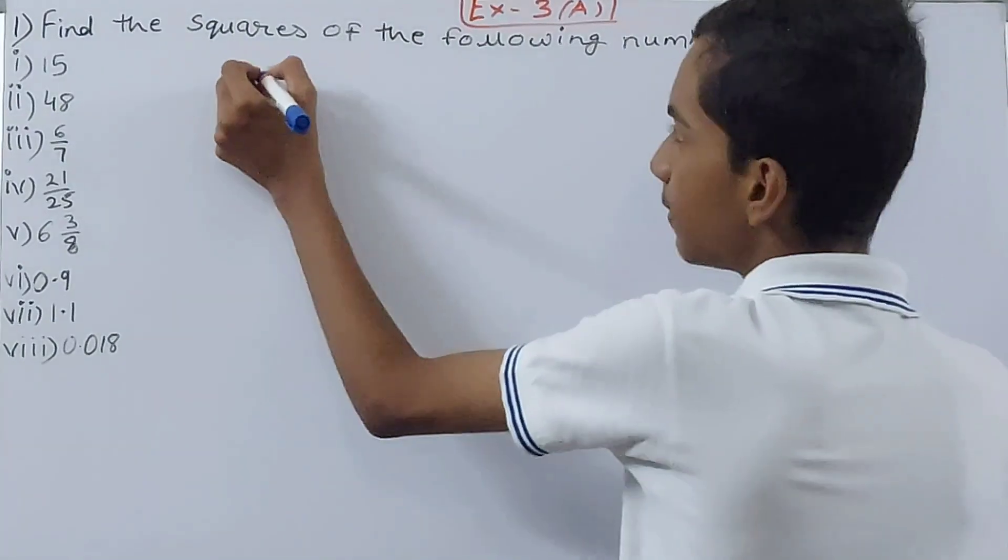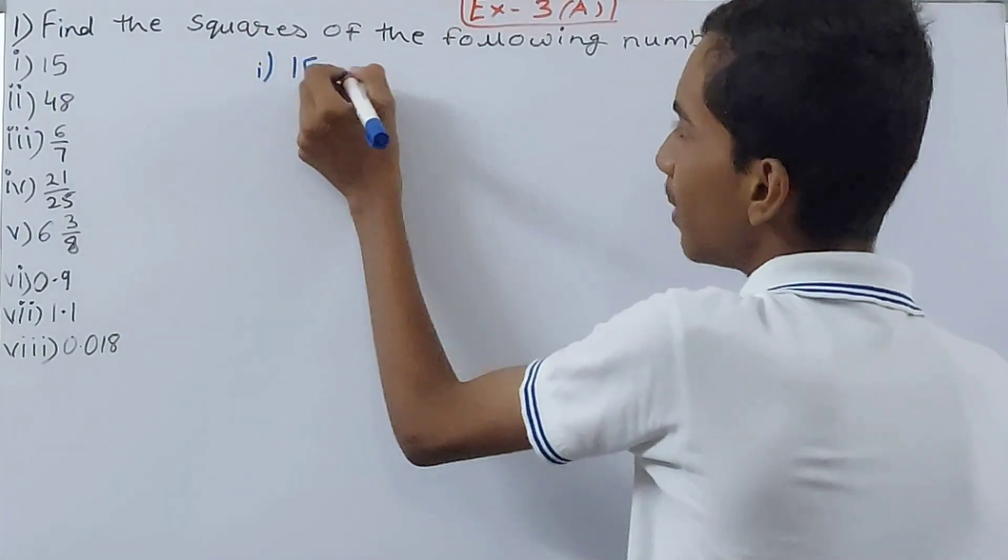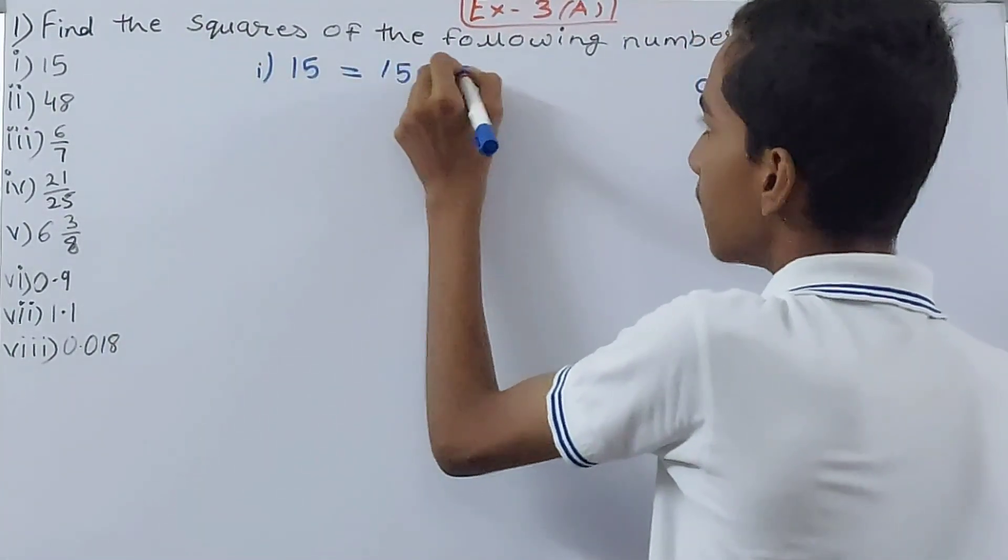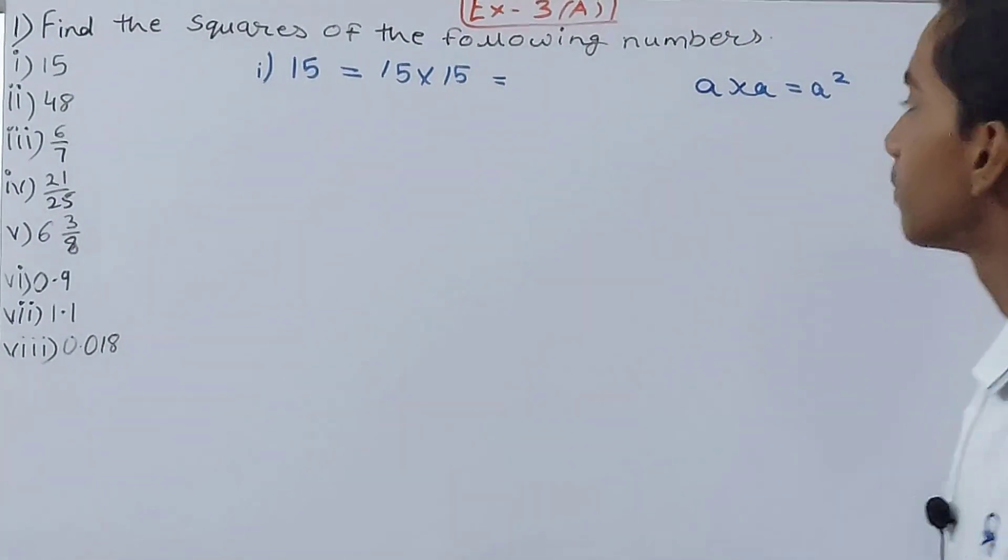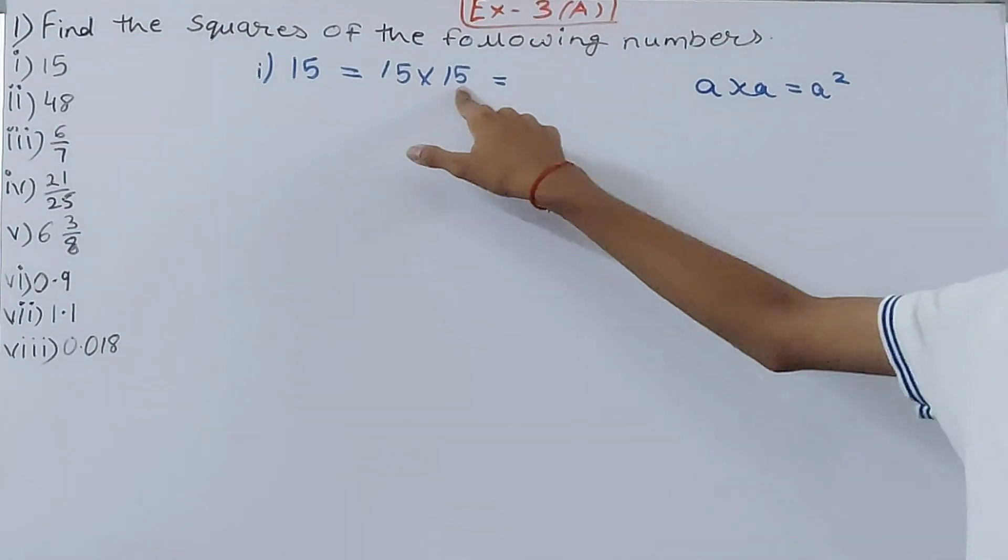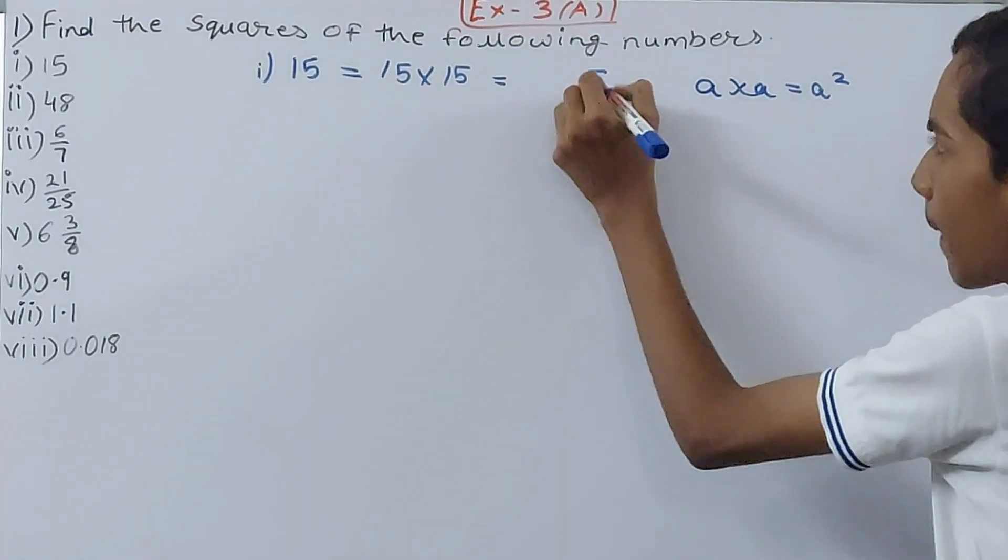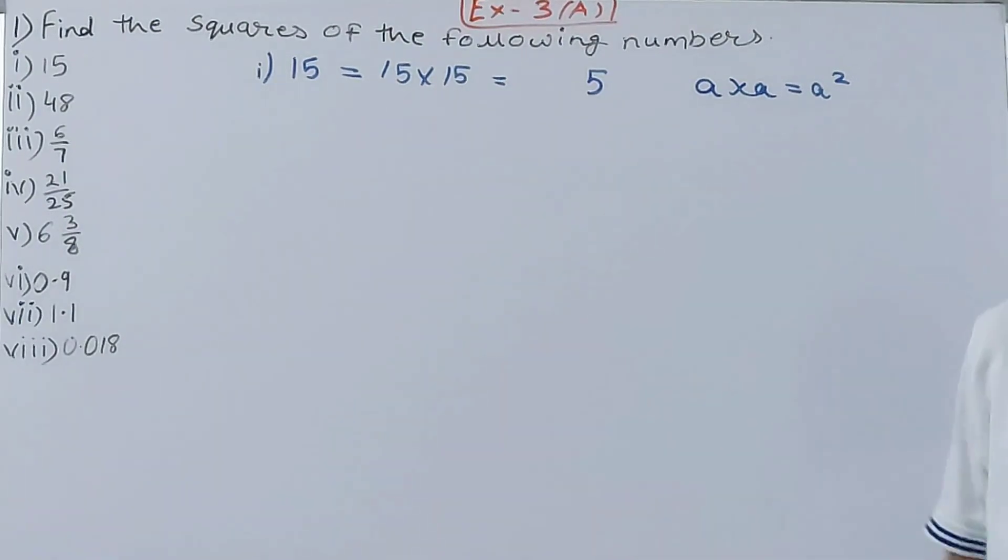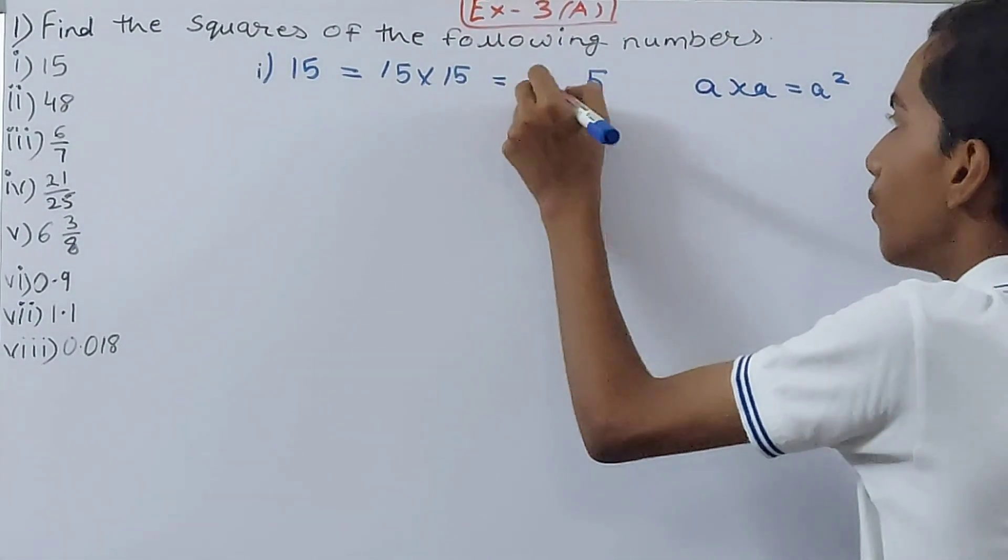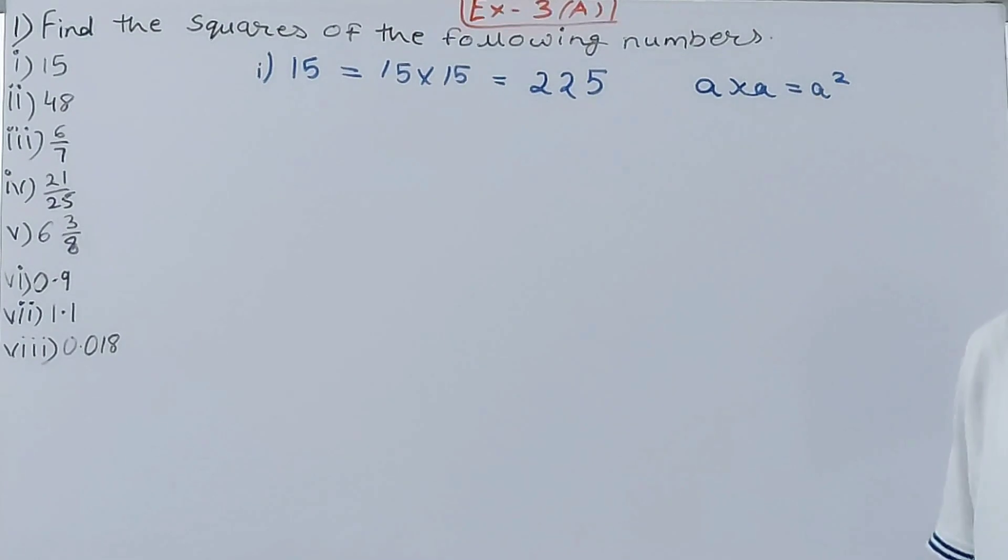First we have 15. It becomes 15 into 15. 15 into 5 is 75, so 5 and 7. 15 into 1 is 15, plus 7 is 225. This is just multiplication, you can do it on your own also.